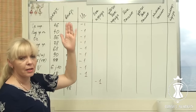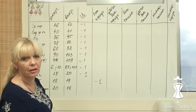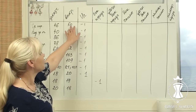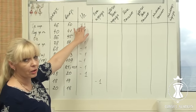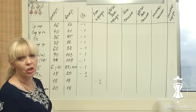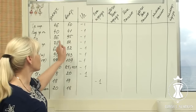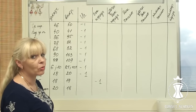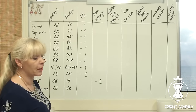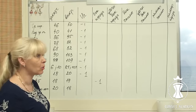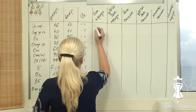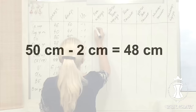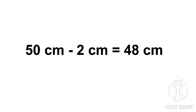Bust front measurement. It is 46 cm on the client and 50 cm on the pattern. But I have already adjusted it down by 1 cm from either side at the bust line level, i.e. a total of 2 cm. 50 cm minus 2 cm equals 48 cm.